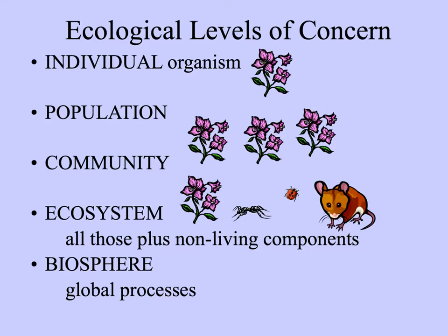The levels of study in ecology range from autecology, the study of individual organisms interacting with the environment, to population ecology — sometimes called deme ecology — and then community, ecosystem, and biosphere ecology. These broader levels are called synecology.